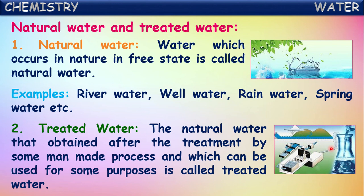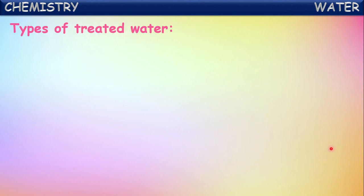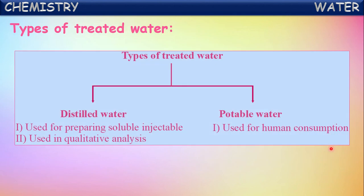Naturally existing water is called natural water. Water collected from natural bodies undergoes certain purification methods for use in different purposes - that water is called treated water. This treated water is of two types: distilled water and potable water.